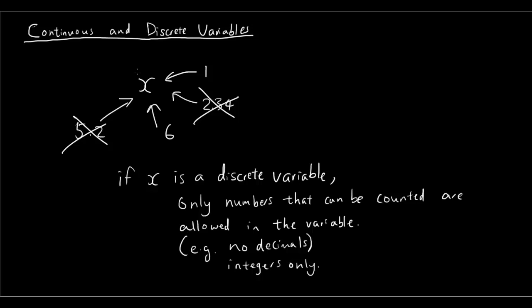So for example, we can put in into the variable 3 or we can put in there 8 as long as it's a whole number. Okay, so integers, meaning that the number can be negative as well. So we can put in, for example, negative 6, as long as there's no decimals. So right now, x is a discrete variable.